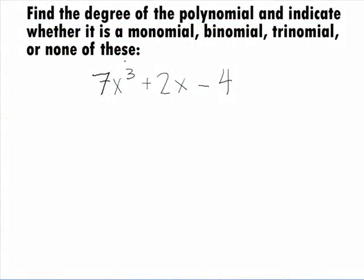In this example, we want to find the degree of the polynomial 7x to the 3rd power plus 2x minus 4 and indicate whether the polynomial is a monomial, binomial, trinomial, or none of these.